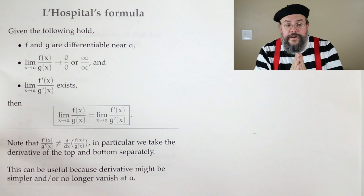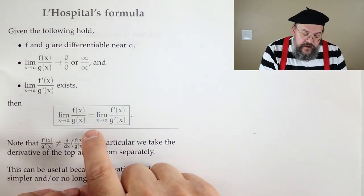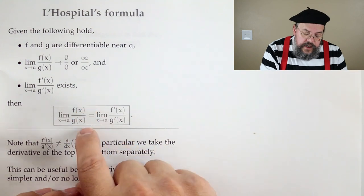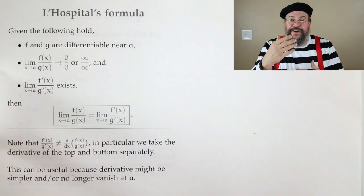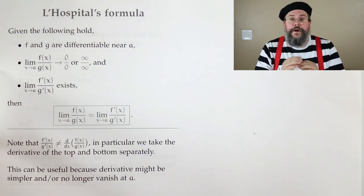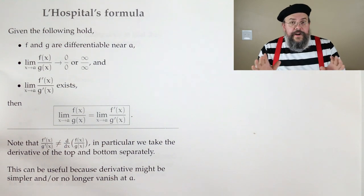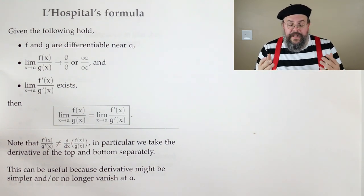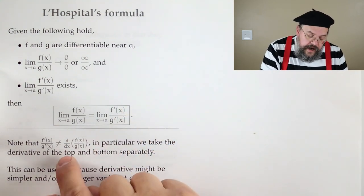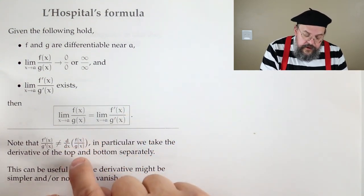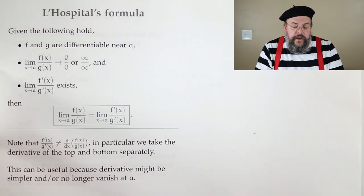Now, one word of warning. Oftentimes when people think of, oh, I'm taking the derivative, they say, oh, it's f over g. I should take a quotient rule, because that's how you take a derivative of a function over a function. But that is not what is required. In fact, it's very much not what you want to do. Quotient rules tend to make things more complicated. Remember, it's the derivative of the top over the derivative of the bottom. It's not the same as taking the derivative of the whole expression. Remember that.